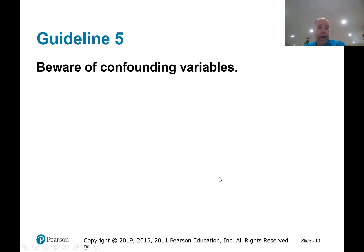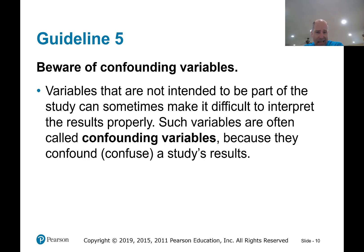Guideline number five: beware of confounding variables. Confounding means confusion — to confound means to confuse. What we're talking about are variables that are not intended to be part of the study but were missed and not accounted for. They can make it difficult to interpret the results properly — were the results coming from the variables we were interested in, or from these unexpected variables confounding the results? Such variables are known as confounding variables or lurking variables.